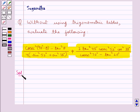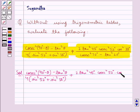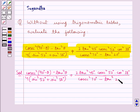Let's proceed with the solution now. We need to evaluate cosec²(90° - θ) - tan²θ, over 4·(sin²52° + sin²38°), plus 2·tan²45°·cosec²52°·cos²38°, this whole over cosec²70° - tan²20°.